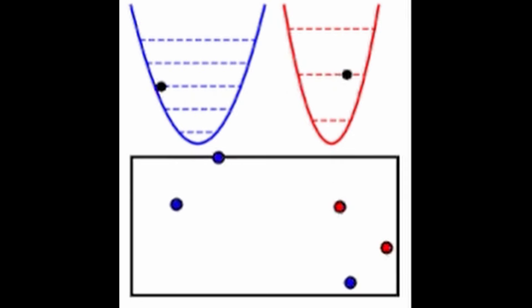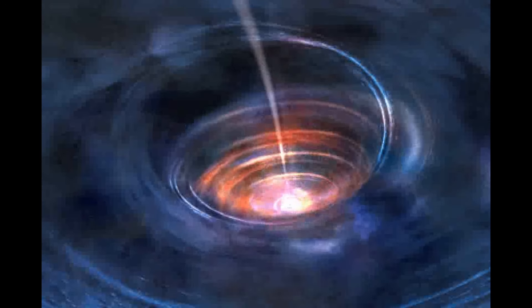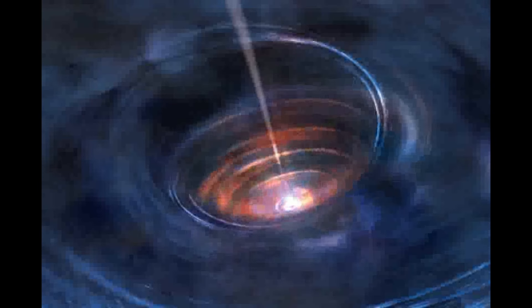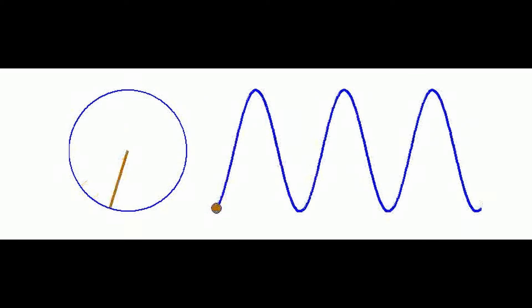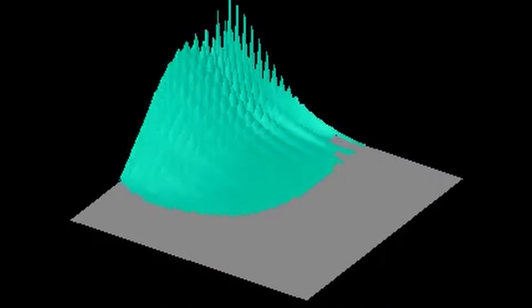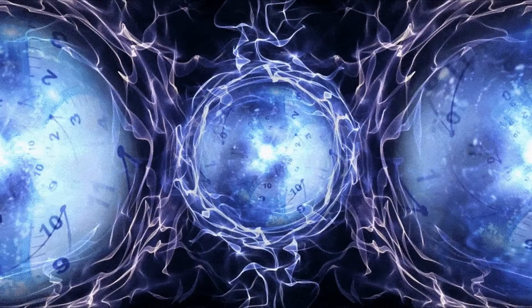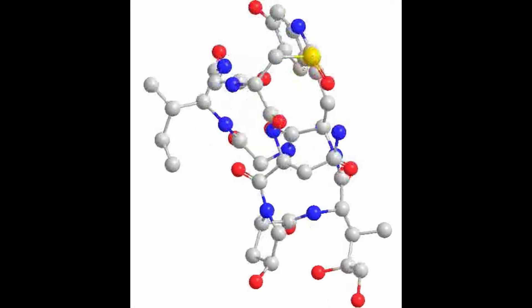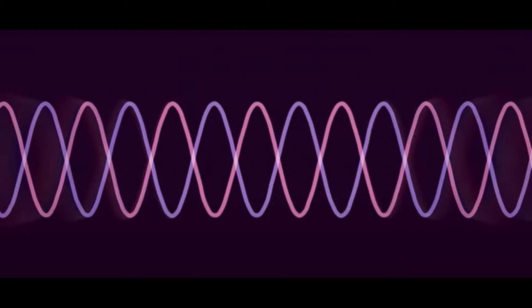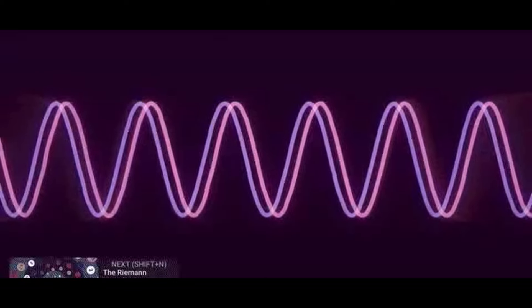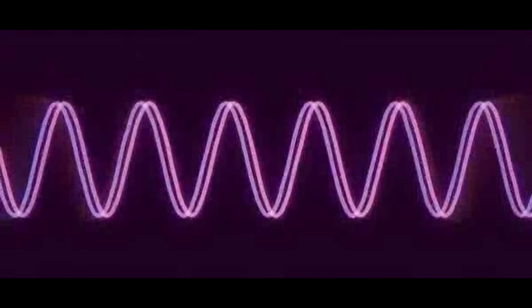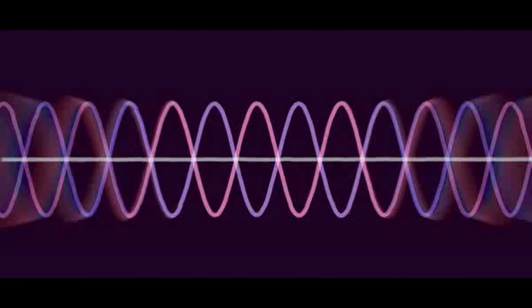Entanglement entropy provides a way to understand the emergence of space-time geometry from the entanglement of quantum fields. According to the AdS/CFT correspondence, a realization of the holographic principle, the entanglement entropy of a region in a conformal field theory (CFT) is related to the area of a minimal surface in the bulk anti-de Sitter (AdS) space. The most famous formula relating entanglement entropy to the holographic principle is the Ryu-Takayanagi formula, which states that the entanglement entropy of a boundary region is proportional to the area of the minimal surface in AdS space anchored to that region: S = Area(A) / 4G_N. This formula shows a direct link between quantum entanglement and space-time geometry.